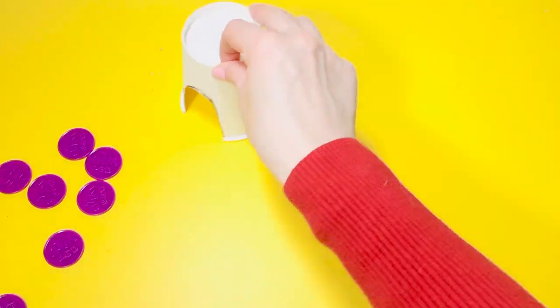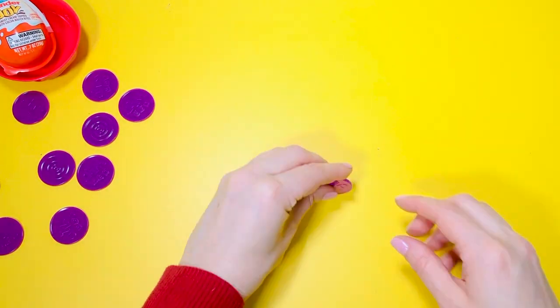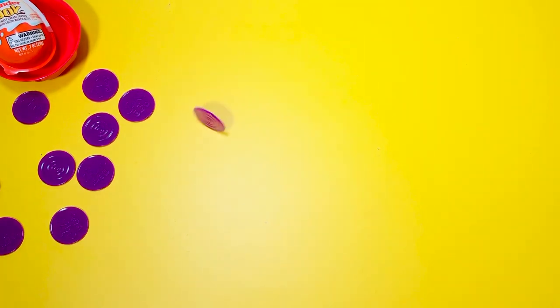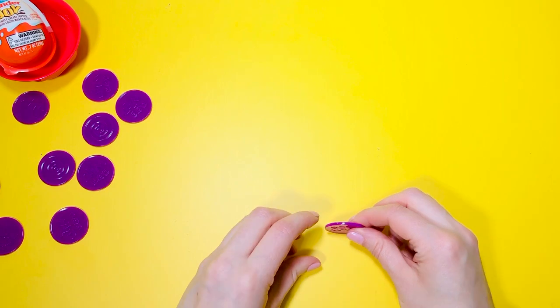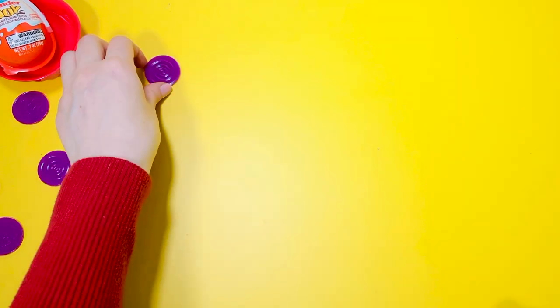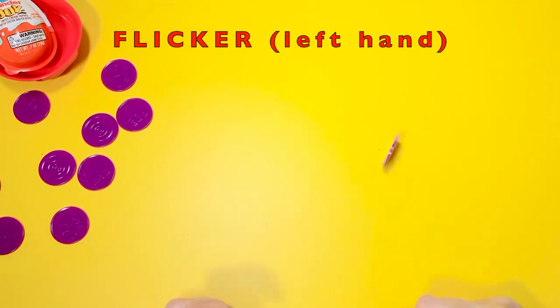Game number six: let's flick it in one side. Let's flick it five times. Now flick using your left hand. Let's do it five times.